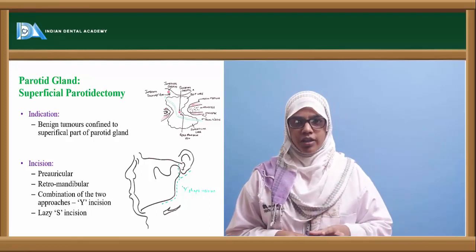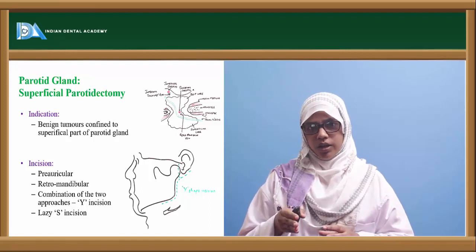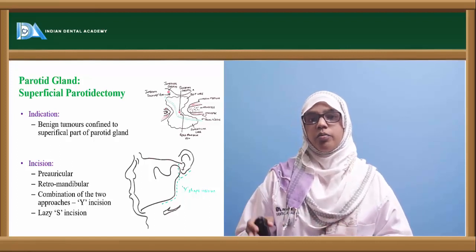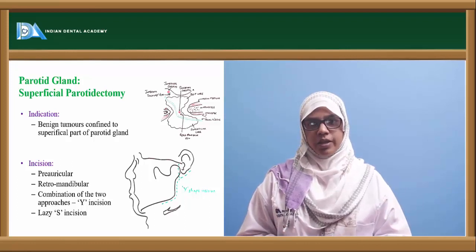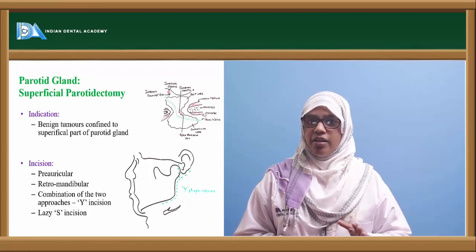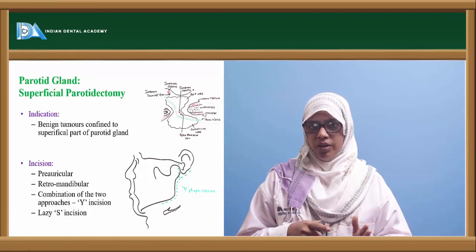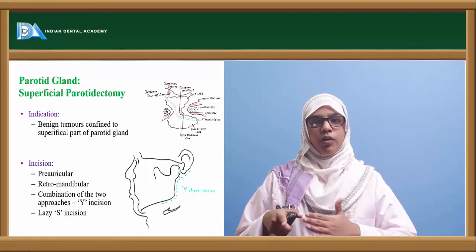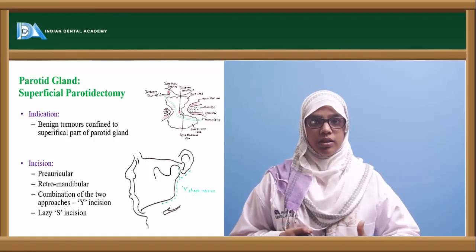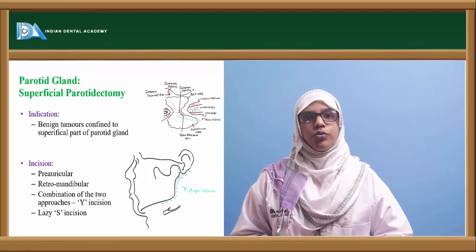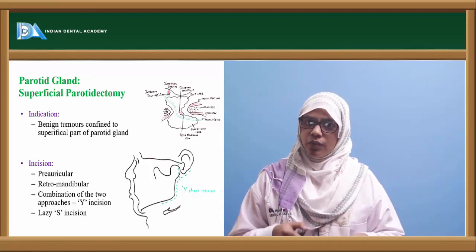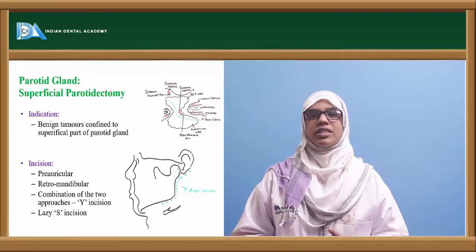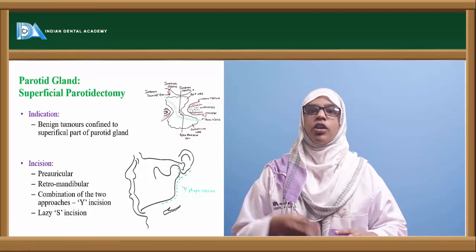The preauricular incision starts in the preauricular area just anterior to the tragus and follows the ear outline just below the ear lobe. The retromandibular incision is behind the posterior border of the ramus, extending to the angle of the mandible. For the Y-shape incision, the anterior arm starts in the preauricular area from the tragus, curves to the lobe, goes behind the ear, then extends downward from the angle of the mandible towards the hyoid bone along the skin crease. The lazy S incision follows a similar path going behind in the angle region then down the neck toward the hyoid along the skin crease.